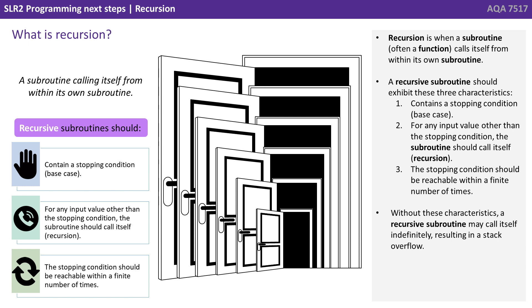A recursive subroutine should exhibit three characteristics. One: contain a stopping condition known as a base case. Two: for any input value other than the stopping condition, the subroutine should call itself — that's the recursion. And three: the stopping condition should be reachable within a finite number of times. Without these characteristics, a recursive subroutine may call itself indefinitely, resulting in a stack overflow.